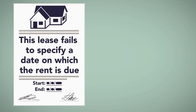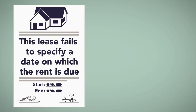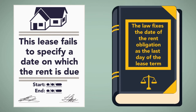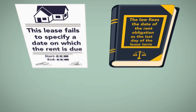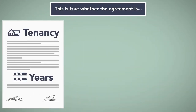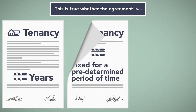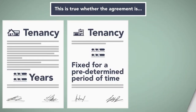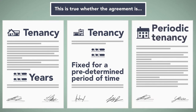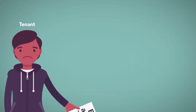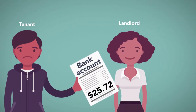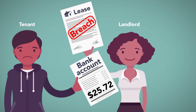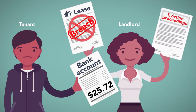Similarly, if the lease fails to specify a date on which the rent is due, the law fixes the date of the rent obligation as the last day of the lease term. This is true whether the agreement is a tenancy for years, fixed for a predetermined period of time, or is a periodic tenancy. The failure to pay rent is a breach of the lease, and it allows the landlord to terminate the lease and initiate eviction proceedings.